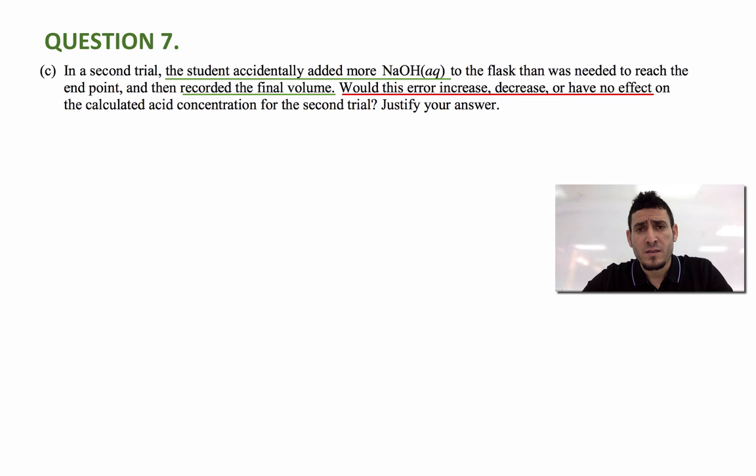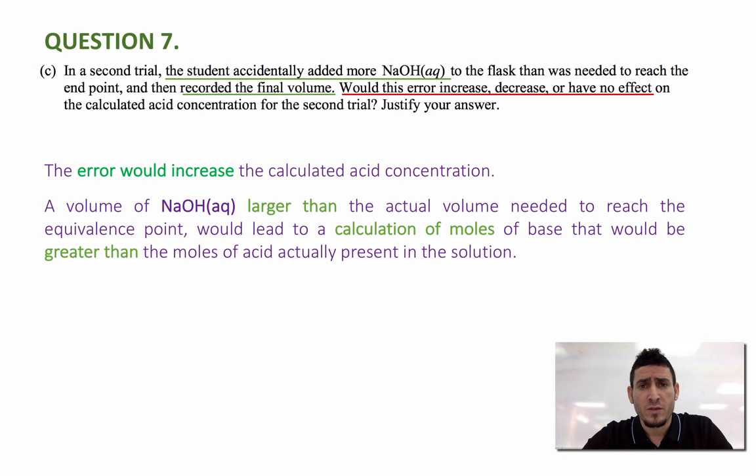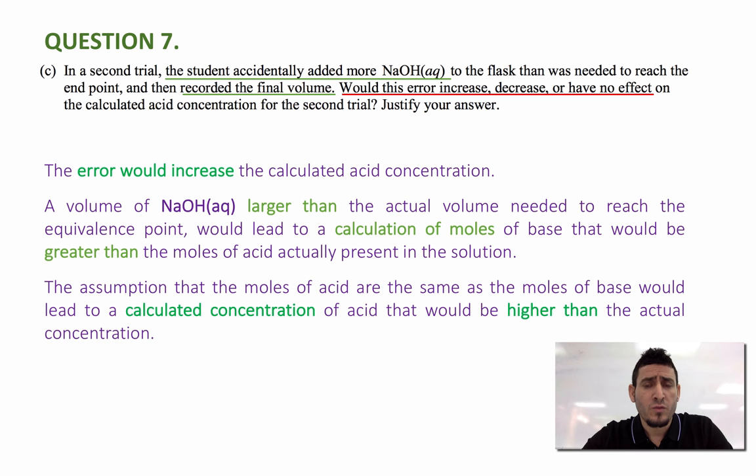Now right away I can say that the error would increase the calculated acid concentration because adding a larger volume of sodium hydroxide will lead to an increase in the added number of moles of OH minus. Since we assume that the number of moles of H plus in the solution is equal to the number of moles of OH minus added. So the number of moles of H plus will be higher and therefore the concentration or the calculated concentration of the acid will also be higher. So the answer is the error would increase the calculated acid concentration.